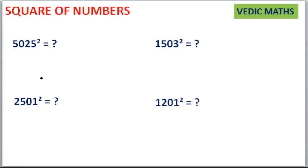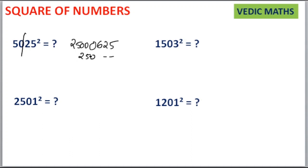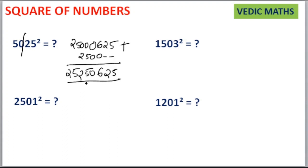Next is 5025 squared. Separate it as 50 and 25. 50 squared is equal to 2500. And 25 squared is equal to 625 — write it as 4 digits: 0625. Then 50 into 25 is equal to 1250, and 1250 into 2 is equal to 2500. Leave the 10th place and units place, then write 2500. Adding gives you 25250625 as your answer.